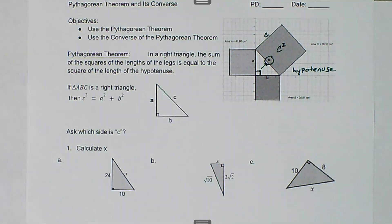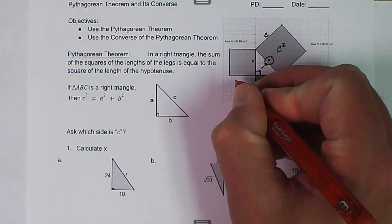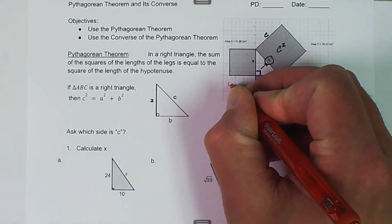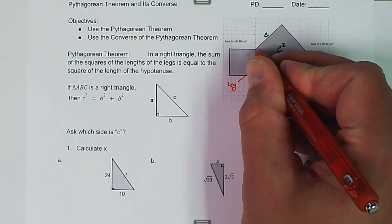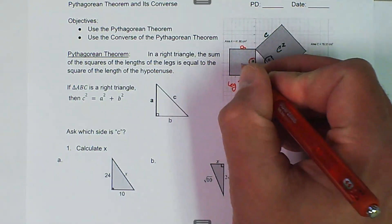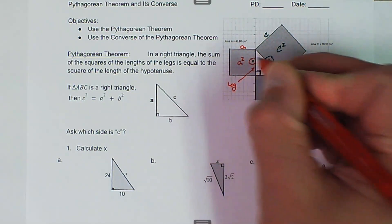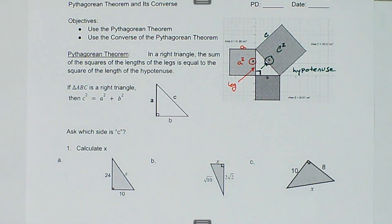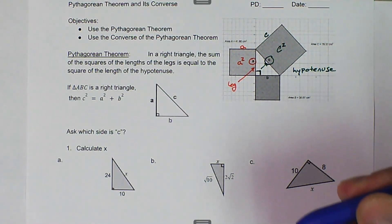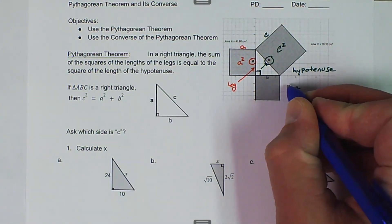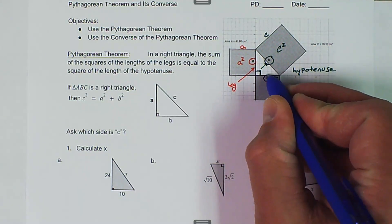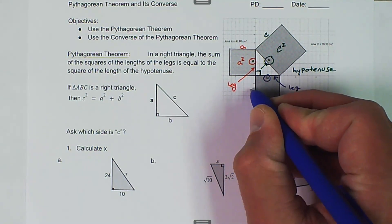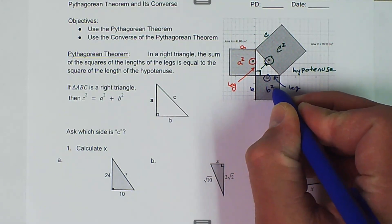Now we have two legs. This leg here has the A value. If this side is A and this side is A, the area of this square is A squared. Next, we have another leg, which is our B value. And if this side is B and this side is B, then the area of this square is B squared.